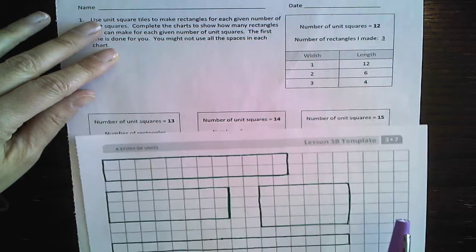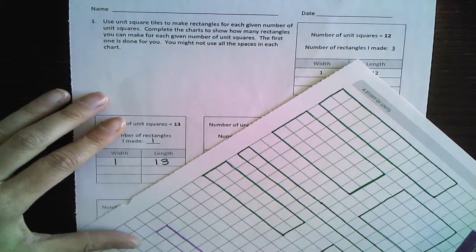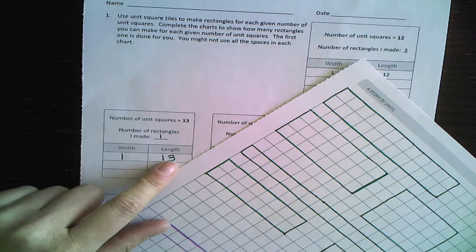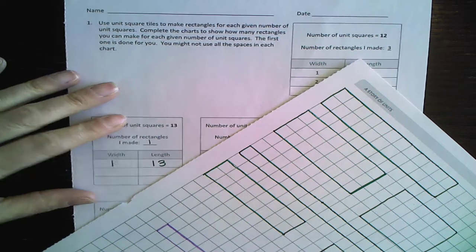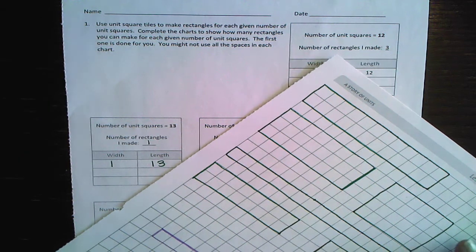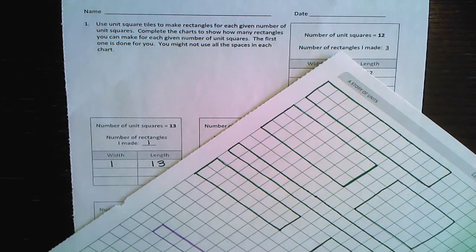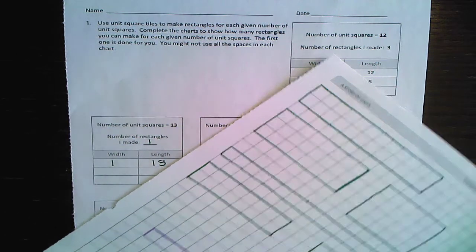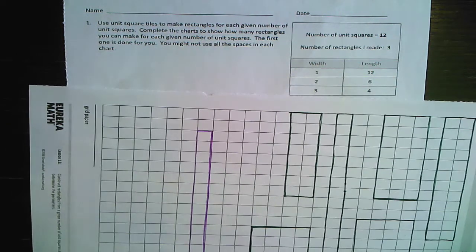So let's do this first one together. What can you multiply to get 13? Just one in 13. That's the only thing. You can't do two times anything. It's an odd number. It's prime. We're not doing it. Sorry, 13. You only have one. Okay. So go ahead and pause this, complete the rest, and meet me back here.